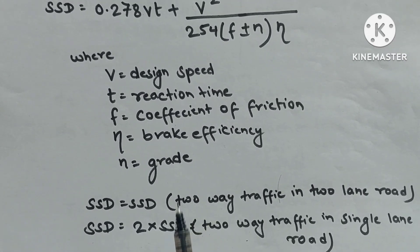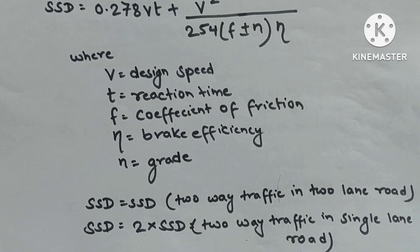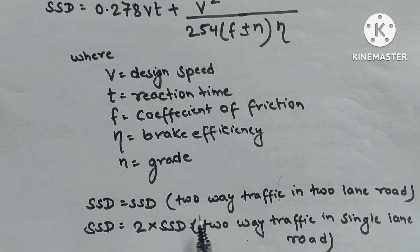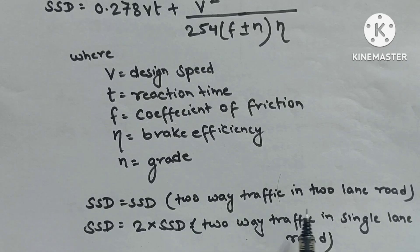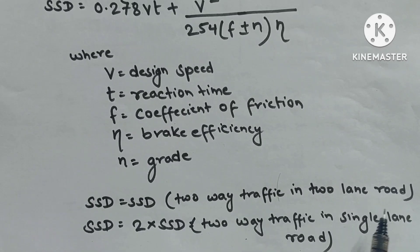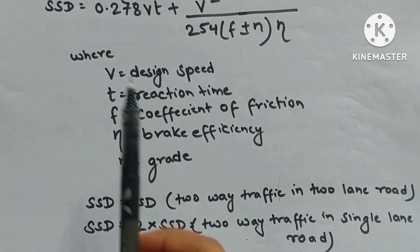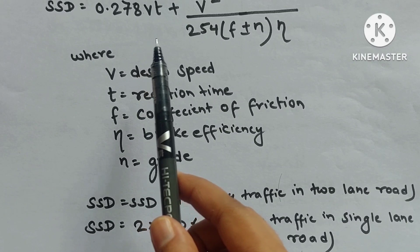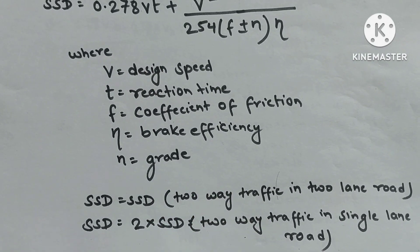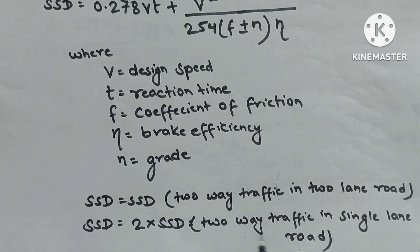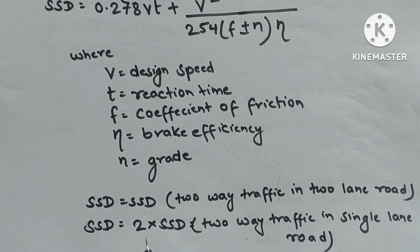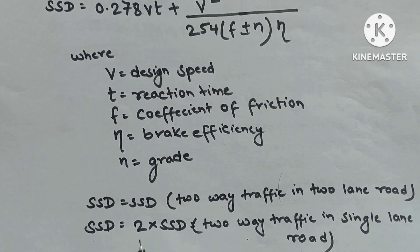Different conditions are given in the question. When two-way traffic in a two-lane road is given, we use the calculated SSD value. When two-way traffic in a single-lane road is given, we multiply by two.